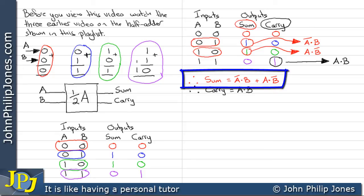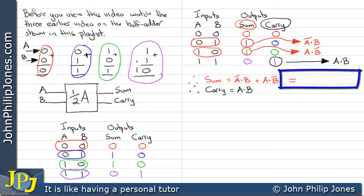Now we should recognize this expression here as being that of the exclusive OR gate. Consequently we can show this as follows: A is exclusively ORed with B.